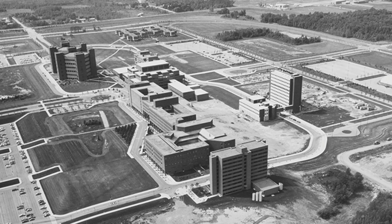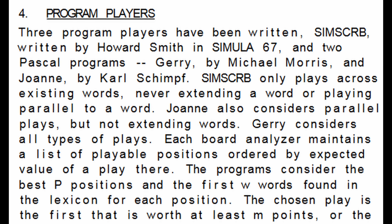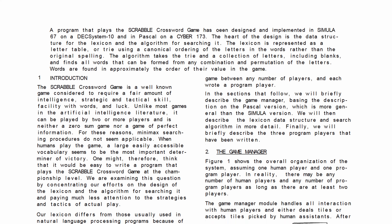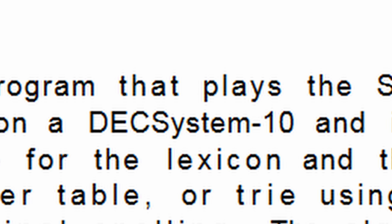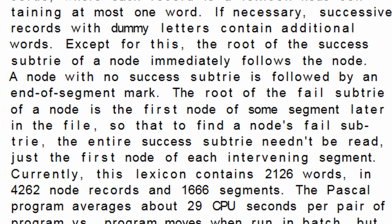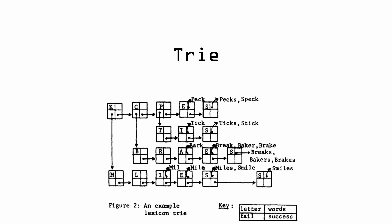Before either of those, though, between 1977 and 1979, Stuart C. Shapiro of the University of Buffalo, along with a team of colleagues, developed their own algorithm for Scrabble on a DEX System 10 with 1,500 words, and then a Cyber 173 with only up to around 2,000 words. But those words were stored on a tree.